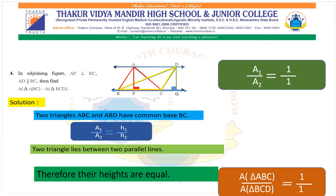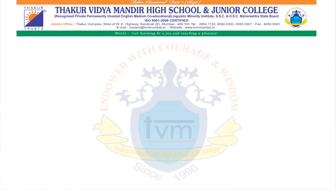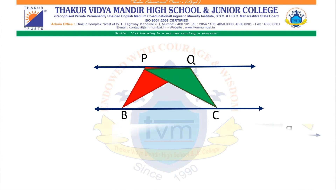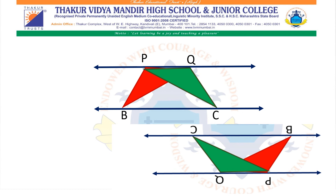To prove area of triangle CPQ equals area of triangle BPQ, we use sum number four from Practice Set 1.1. The two triangles CPQ and BPQ lie between the two parallel lines PQ and BC — which is already given. That means they have a common base PQ and lie between two parallel lines, therefore their heights are equal, and therefore the areas of these two triangles are equal.